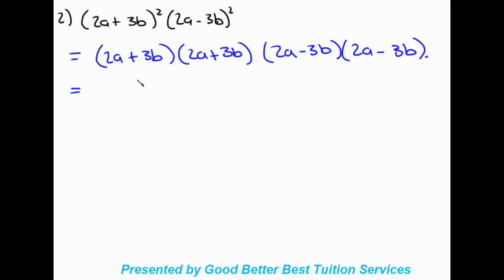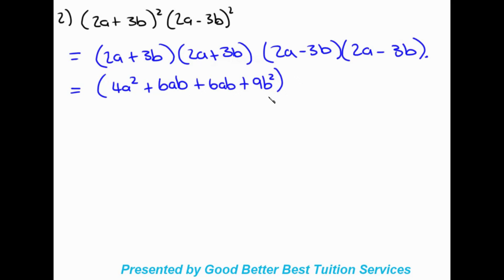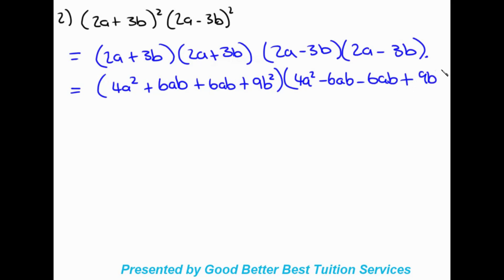Expanding the first pair: 2a times 2a gives 4a squared; 2a times 3b gives plus 6ab; again plus 6ab; and 3b times 3b gives plus 9b squared. For the second pair: 2a times 2a gives 4a squared again; then minus 6ab; minus 6ab again; and then positive 9b squared.